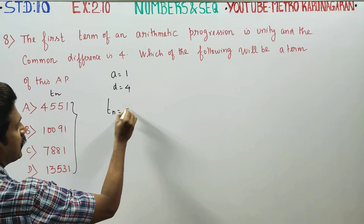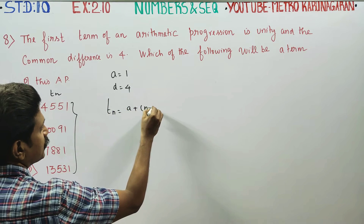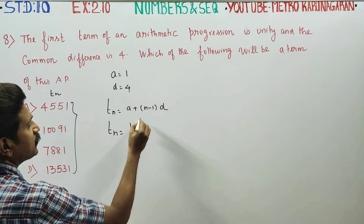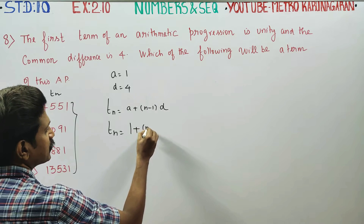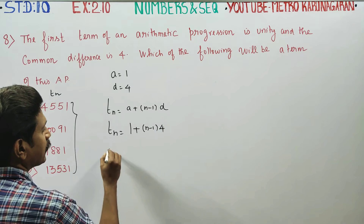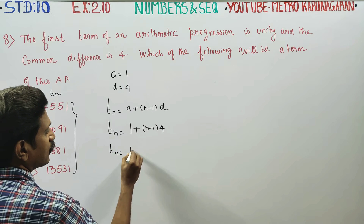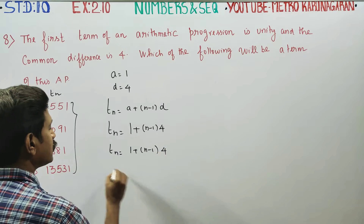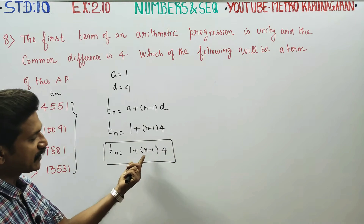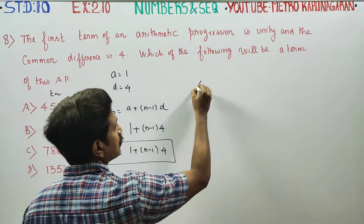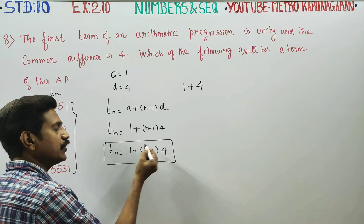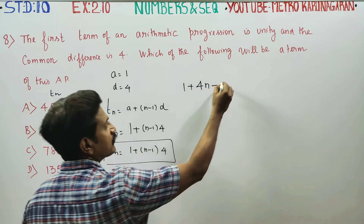The Tₙ formula is: Tₙ = A + (N-1) × D, where A = 1 and D = 4. So Tₙ = 1 + (N-1) × 4. Simplifying: 4 × N minus 1 plus 4, giving us Tₙ = 4N - 3.